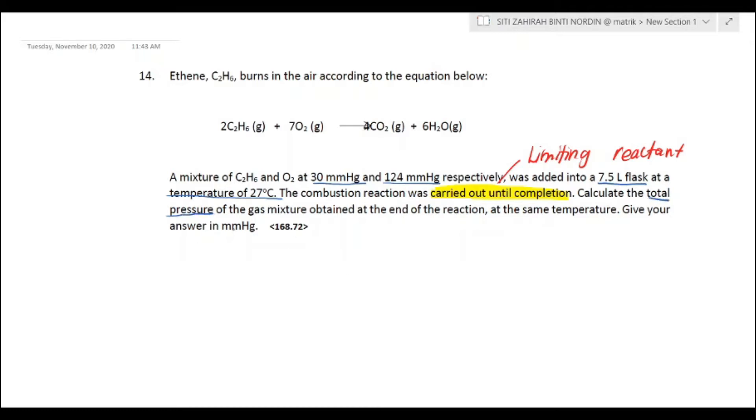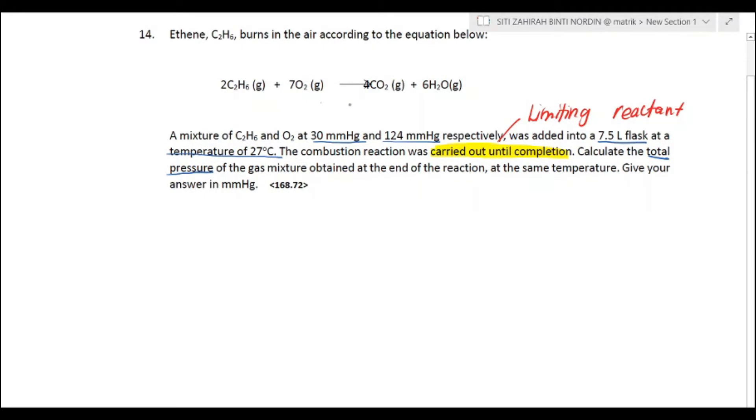The question asks to calculate the total pressure of the gas mixture obtained at the end of the reaction at the same temperature. Give your answer in mmHg. The question specifically asks for the pressure to be in mmHg. First thing first, we need to find our limiting reactant.